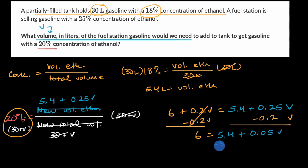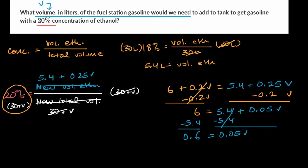Now I could subtract 5.4 from both sides. And what I'm going to get is 6 is, or actually 0.6, I have to be careful, is going to be equal to 0.05V. And now to solve for V, I can just divide both sides by 0.05, 0.05. That's going to get me, this is the same thing as 60 divided by 5, it gets me that V is equal to 12 liters.